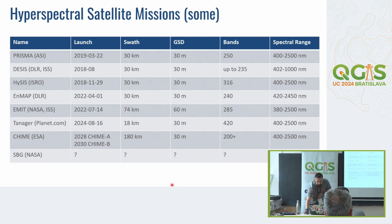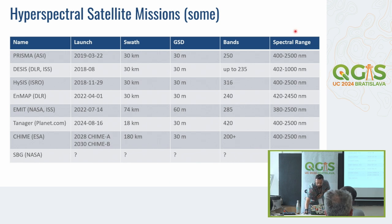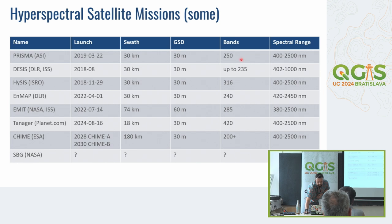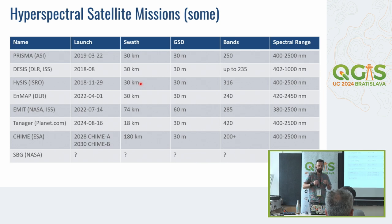Here is a brief overview of some hyperspectral satellite missions. You can see they all map the range between 400 and 2500 nanometers — not all, but most of them — usually more than 100 bands. Many have a spatial resolution, or ground sampling distance, of 30 meters, and similar swath widths covered by one orbit.